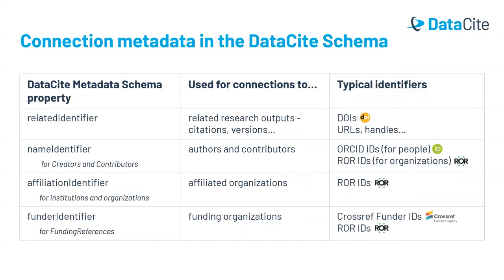There are a few different places in the dataset metadata schema where you can provide connections to other persistent identifiers. First, there is a related identifier property. This allows you to make connections to related research outputs. For example, you could link to an article that describes the dataset or an earlier version of the dataset. In this field, we ideally want to see a persistent identifier like another DOI, but you can also link to a URL if there isn't a persistent identifier available.